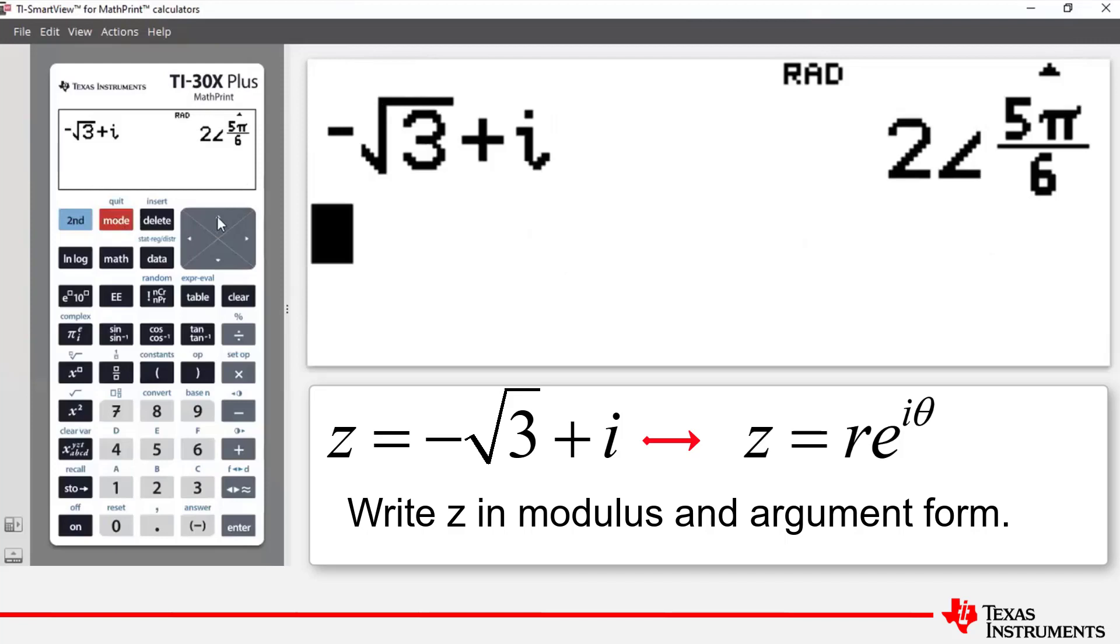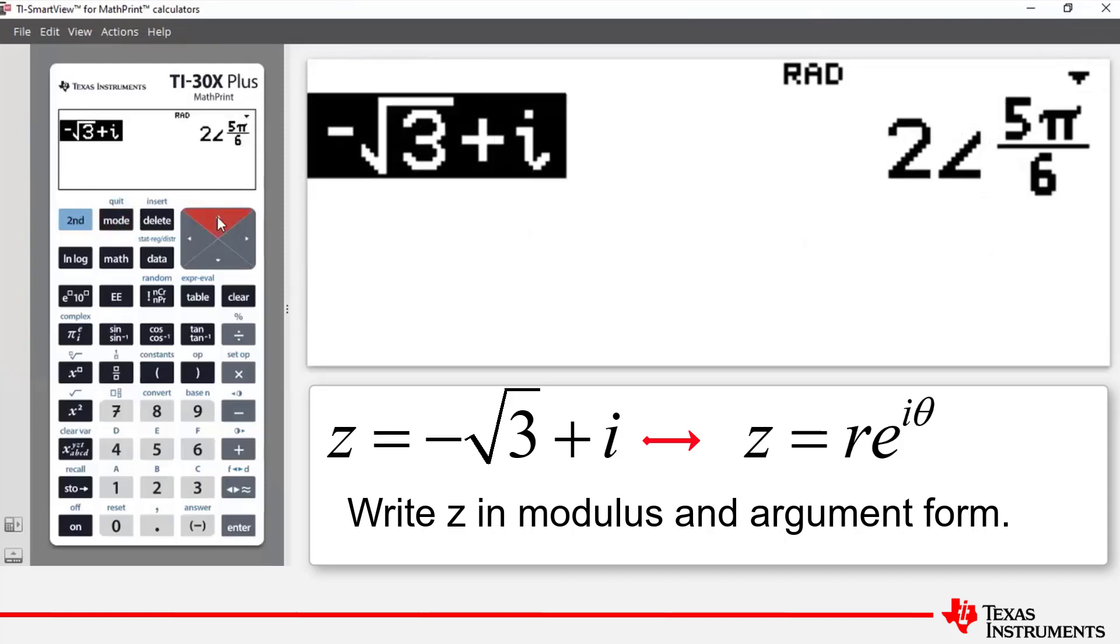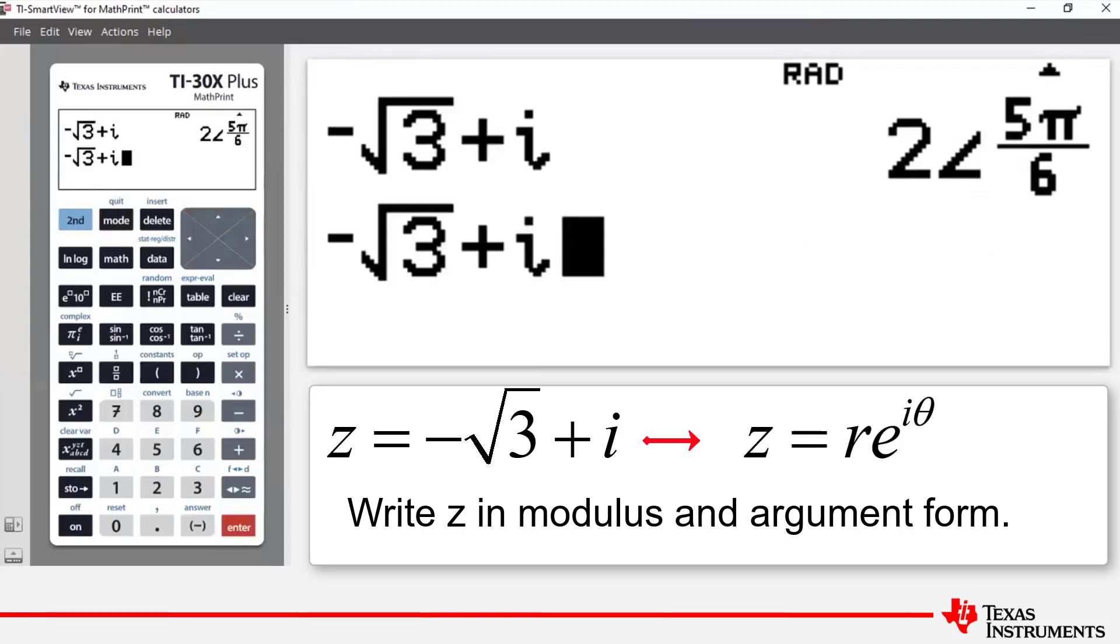Then if we arrow up once and up again to highlight our complex number z in Cartesian form. Press enter to bring it down to a new entry line. We're going to show you now the second way to make the conversion.